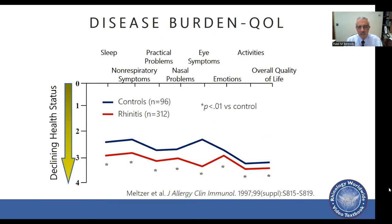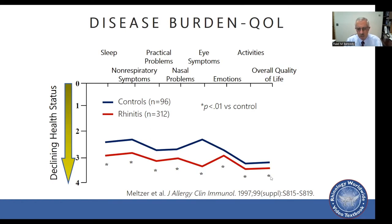The Juniper quality of life questionnaire, administered to controls and patients with rhinitis, covers domains including sleep, non-respiratory symptoms, practical problems, nasal problems, eye symptoms, emotions, activities, and overall quality of life. Consistently and significantly, patients with rhinitis had lower quality of life than patients without rhinitis across all domains.